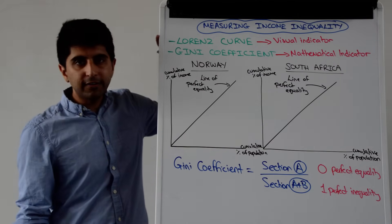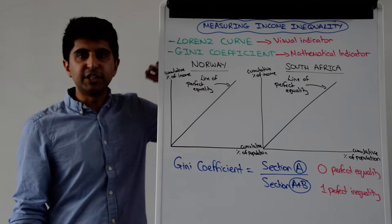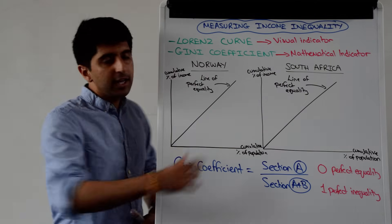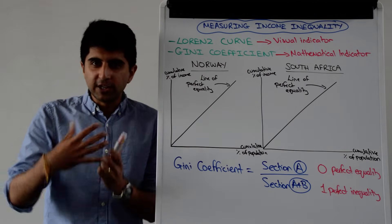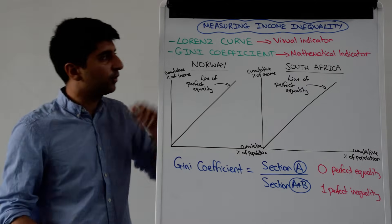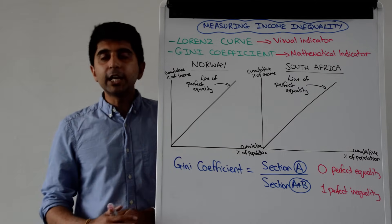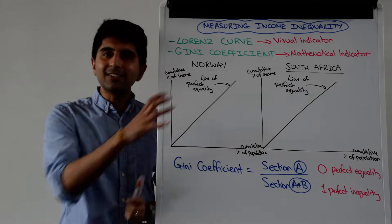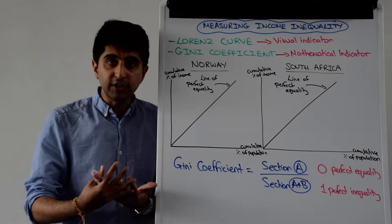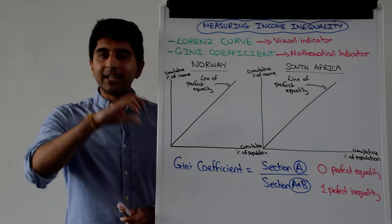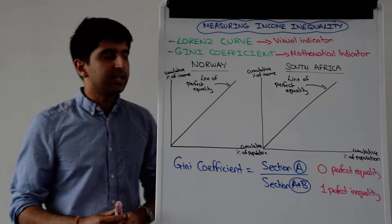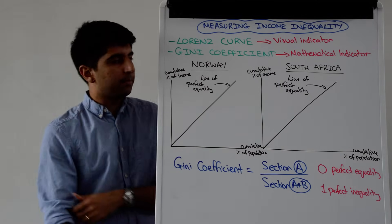The Lorenz curve and the Gini coefficient. The Lorenz curve gives us a visual idea of what income inequality looks like for a given country. The Gini coefficient takes what the Lorenz curve shows us visually and then gives a mathematical number for us to interpret.